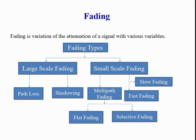What is fading? Fading is the variation of the attenuation of a signal with various variables. A fading channel is a communication channel that experiences fading. Fading may be due to multipath propagation, referred to as multipath-induced fading, or weather — particularly rain — or shadowing from obstacles affecting wave propagation, sometimes referred to as shadow fading.